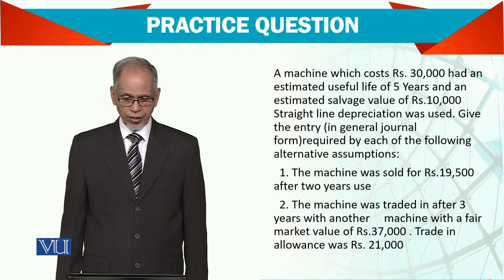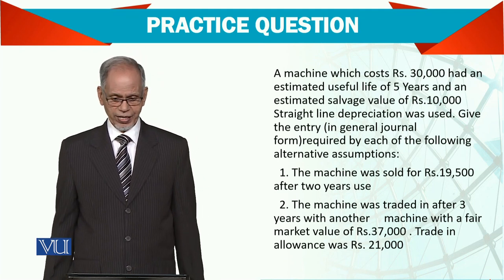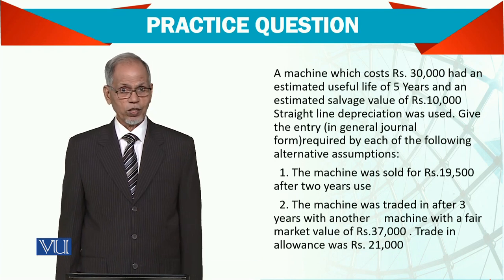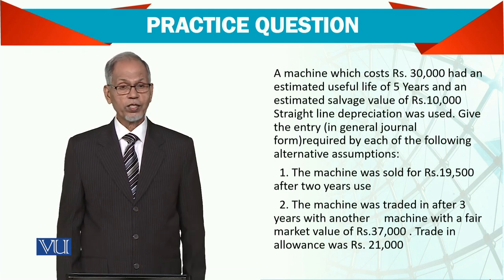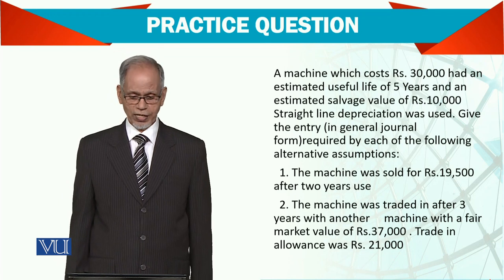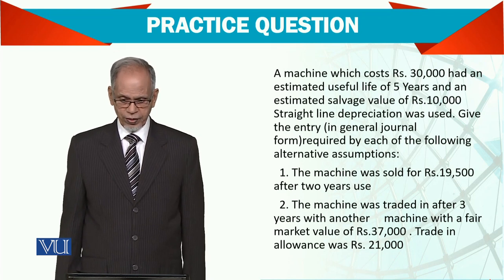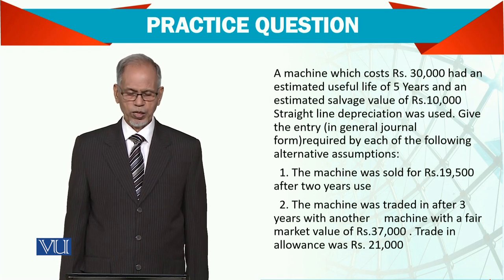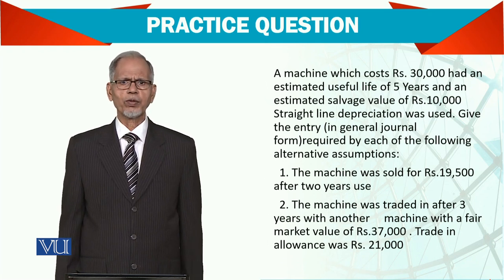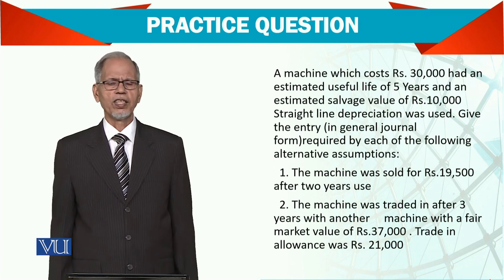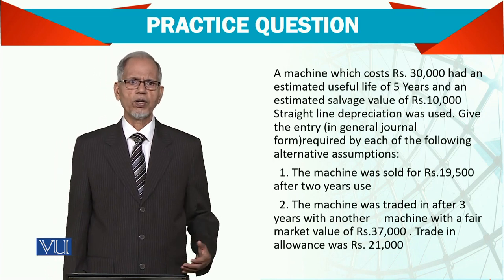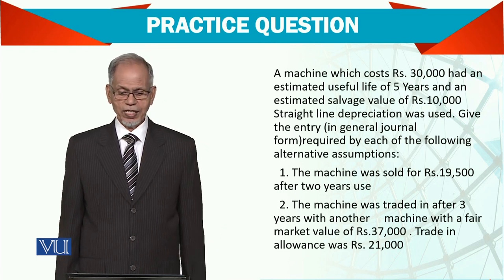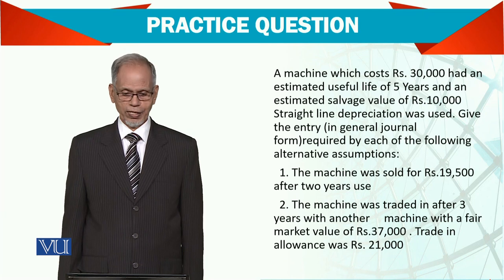Similarly, sometimes we exchange an asset. The machine was traded after 3 years, not 2 years — after 3 years. So 3 years of depreciation would be taken into account. Another machine with a fair market value of 37,000 and a trading allowance of 21,000. Trading allowance means the supplier of the new machine said, for this old machine, we give you 21,000 off. So basically, the cash you are going to pay is 16,000.